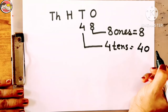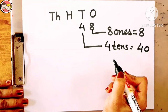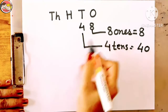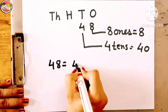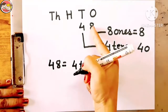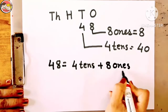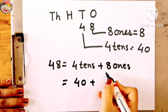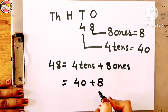We have already learned that 1 ten means 10, 2 tens means 20, 3 tens means 30, 4 tens means 40, 5 tens means 50, and so on — so you need to learn this table. Now let's write the expanded form of 48. First way: 4 tens + 8 ones. Second way: 40 + 8. These are two ways to write the expanded form of a number.